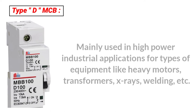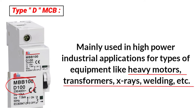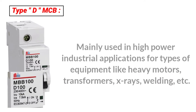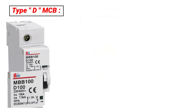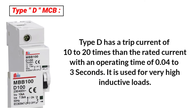Type D MCP is mainly used in high power industrial applications — heavy motors, power plants, transformers, and X-ray machines in hospitals. The normal tripping current is 10 to 20 times the rated current, and this MCP will trip in 0.04 to 3 seconds.